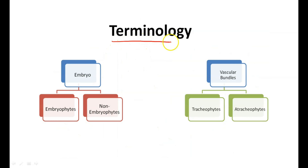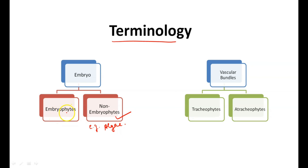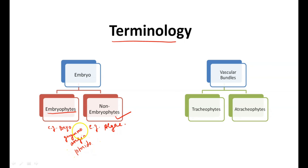Now let's talk about the terminology in plant kingdom, which is very important. First, we will talk about the embryo. In any plant's life cycle, if there is no embryo structure present or formed, the organism is known as a non-embryophyte. The example of non-embryophytes is only algae — no embryo in its life cycle. If an embryo is present in a plant's life cycle, it is known as an embryophyte. Examples are bryophytes, gymnosperms, angiosperms, and pteridophytes.